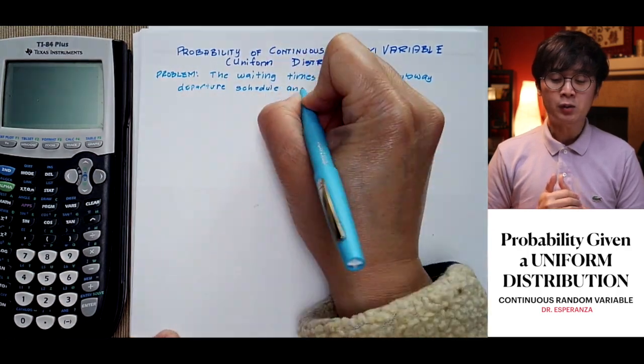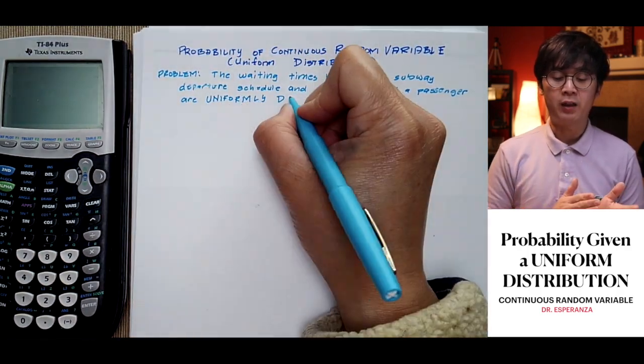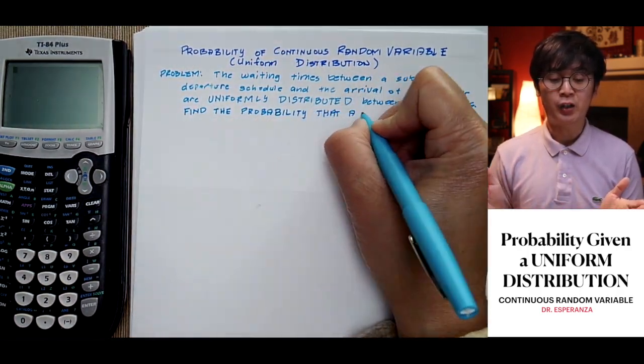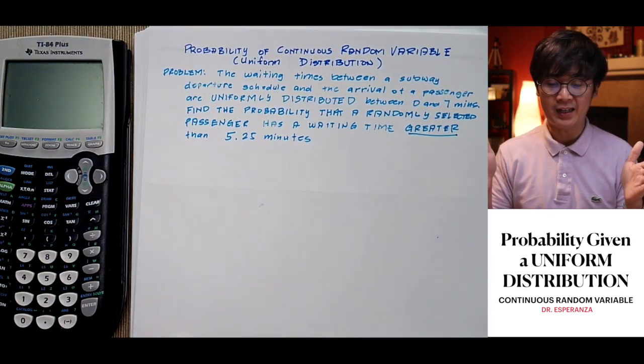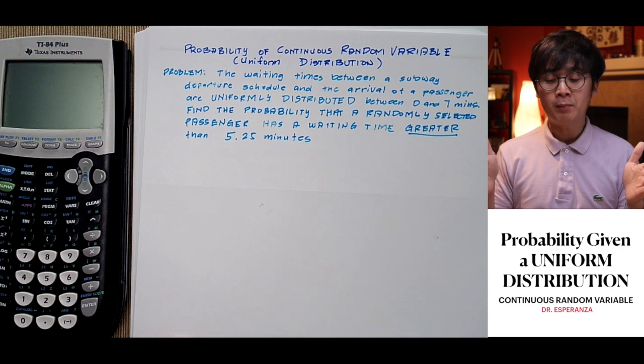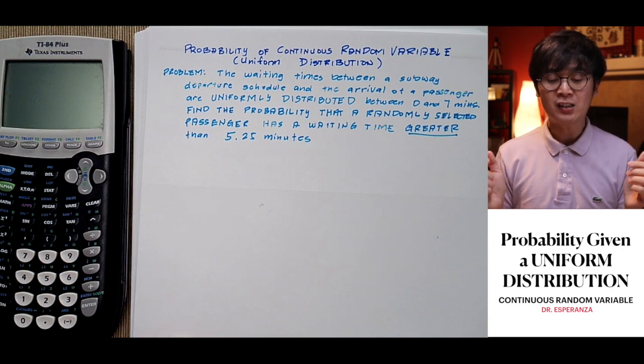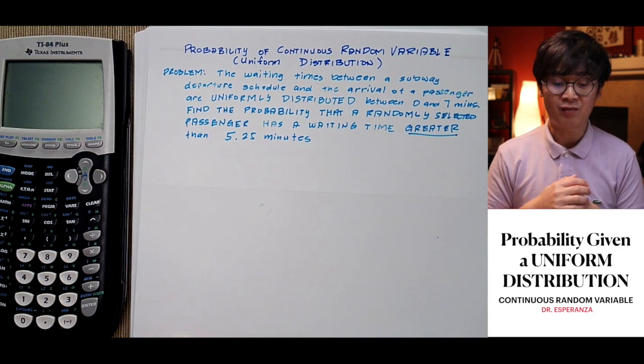the waiting times between a subway departure schedule and the arrival of a passenger are uniformly distributed between 0 minutes and 7 minutes. We need to find the probability that a randomly selected passenger has a waiting time greater than 5.25 minutes.